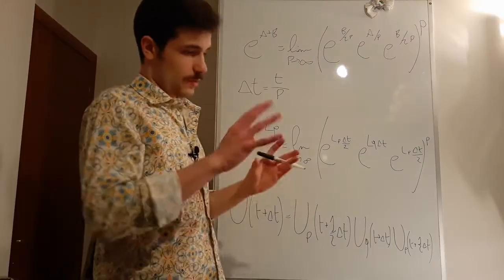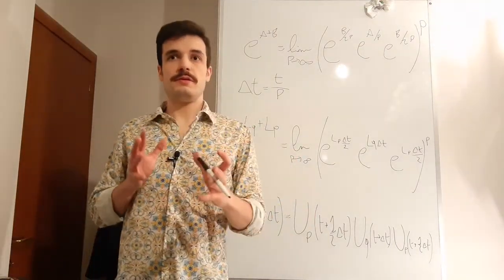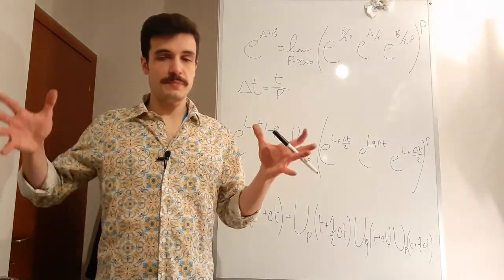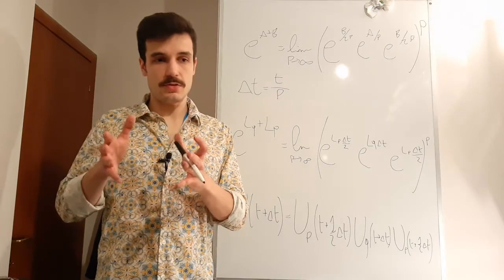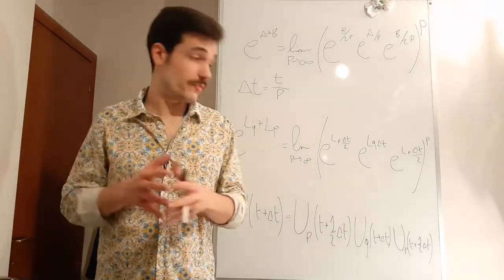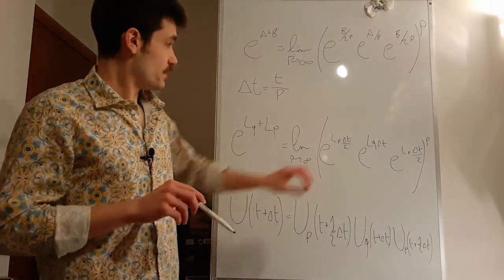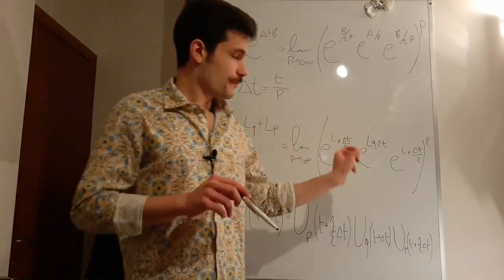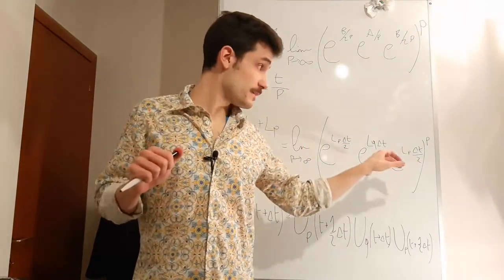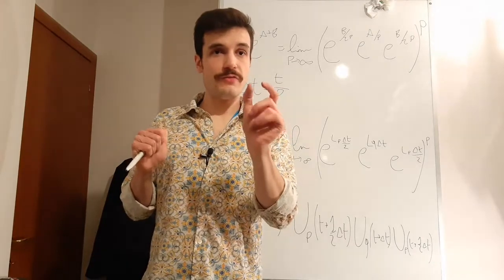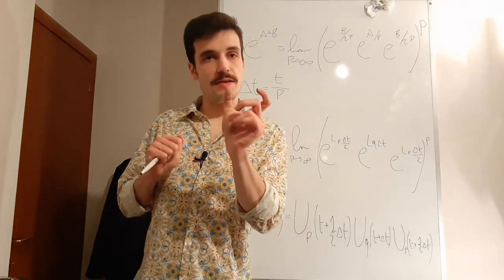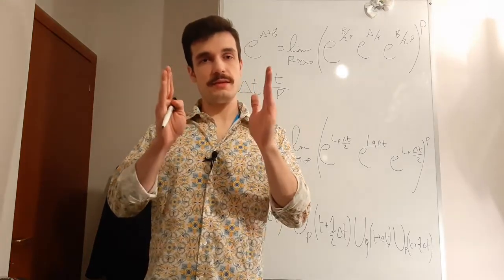If we have different parts of the potential, because we have to split the potential, that have completely different time steps, or better, different frequencies, different time scales, then in that case, you can split it up more and more, having inner loops that will propagate exactly in that way the faster degrees of freedom, like the vibrational.